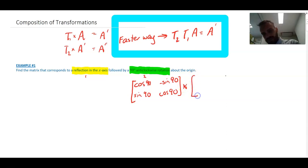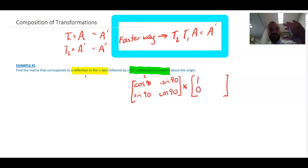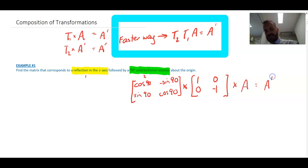The formula sheet doesn't help much with the x-axis reflection, but that matrix is 1, 0, 0, −1 — the y-coordinate flips. That matrix is then multiplied by the object to give the image.